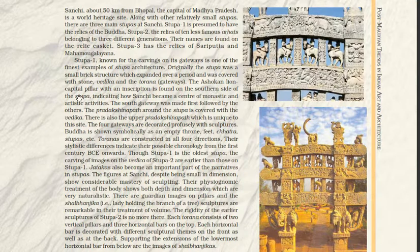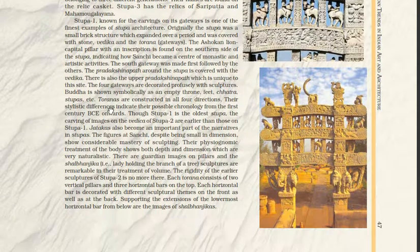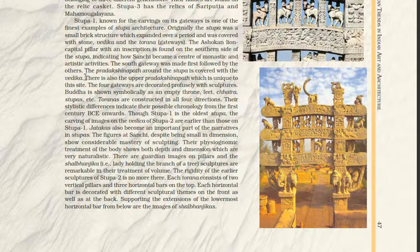The Ashokan lion capital pillar with an inscription is found on the southern side of the stupa, indicating how Sanchi became a center of monastic and artistic activity. The south gateway was made first followed by the others, and the Pradakshinapatha around the stupa is covered with Vedikas. There is also an upper Pradakshinapatha which is unique to the site.